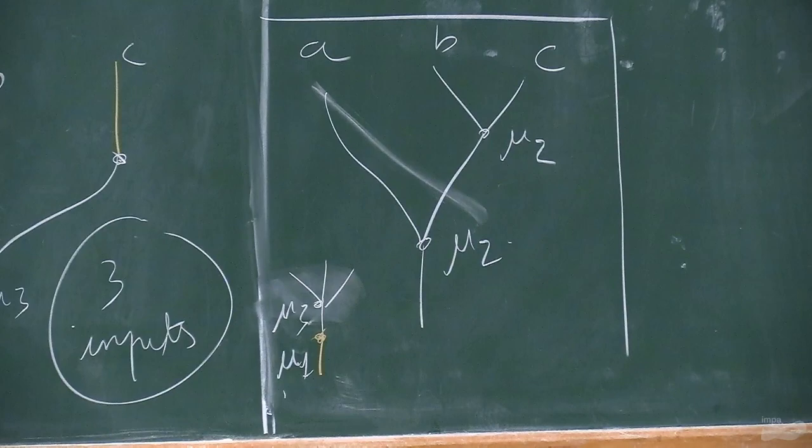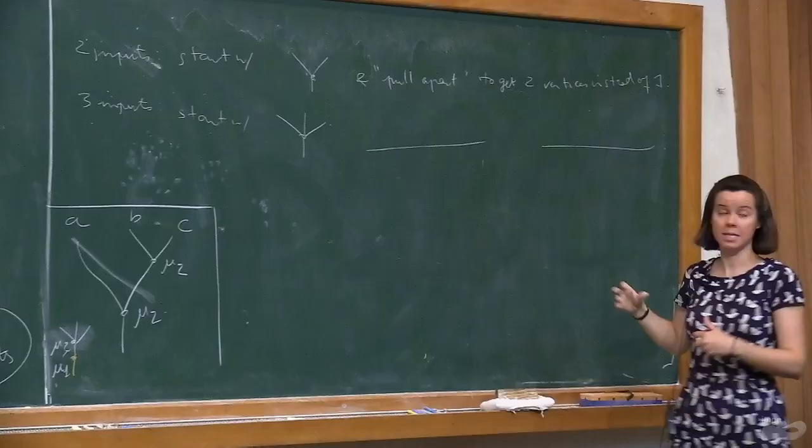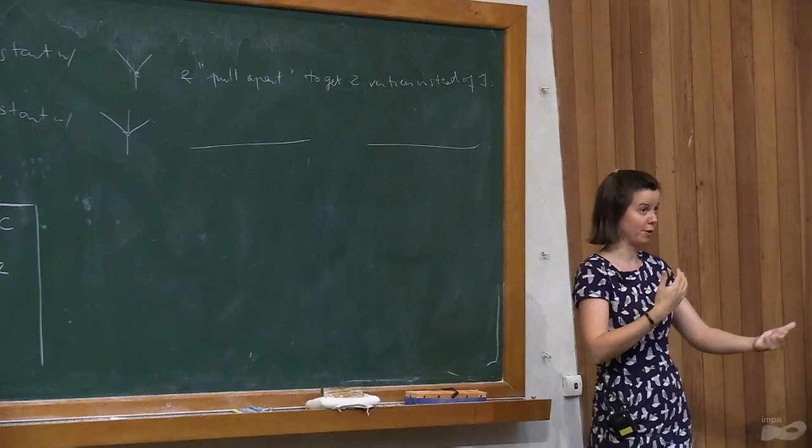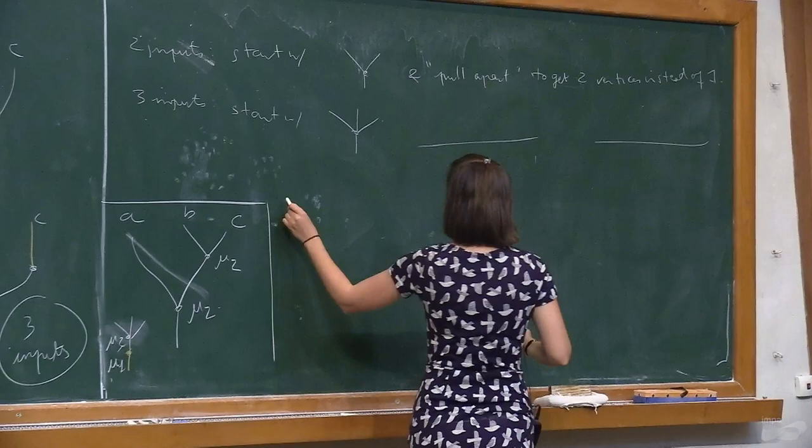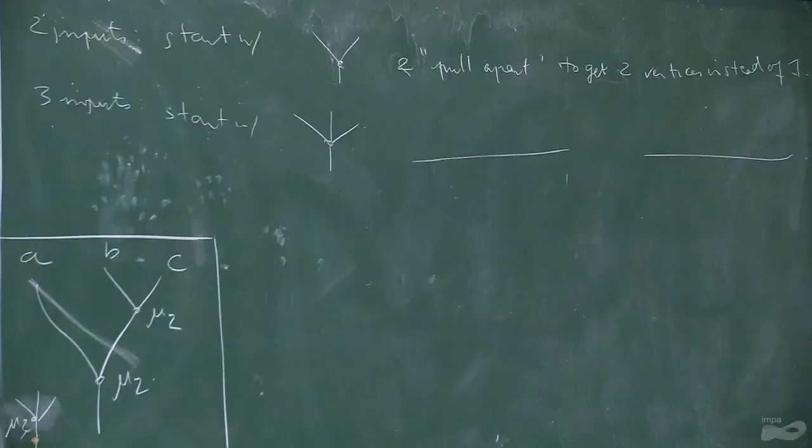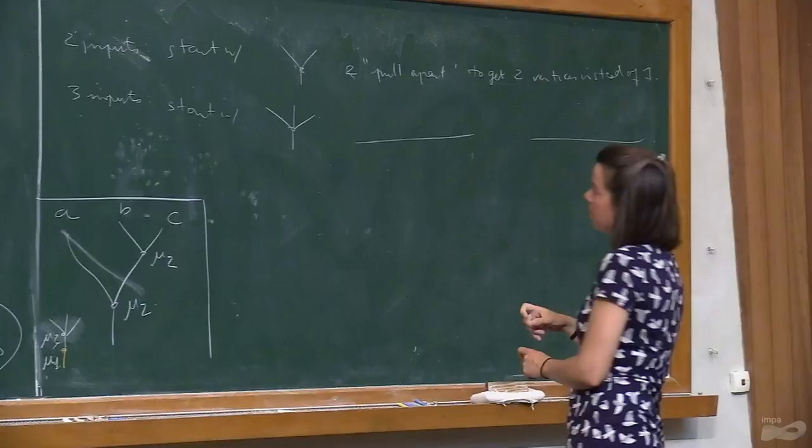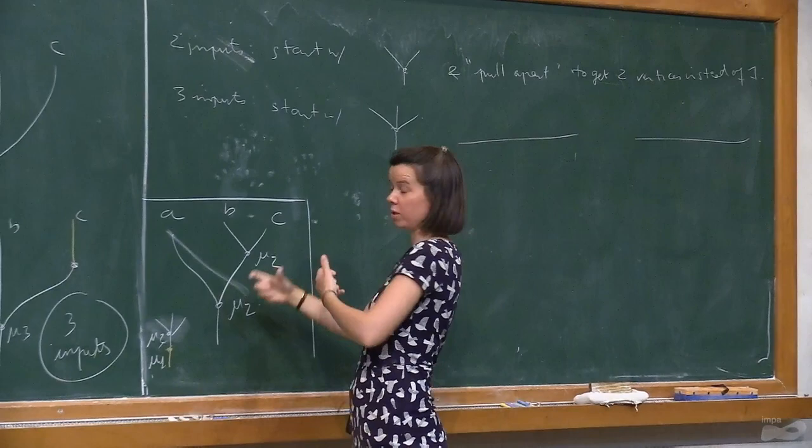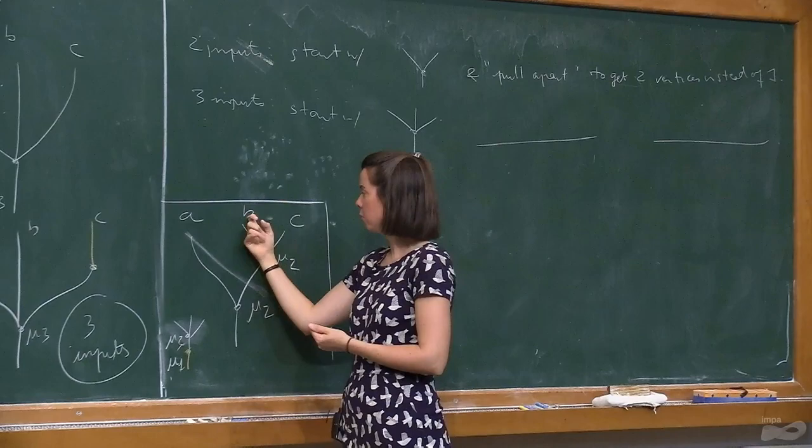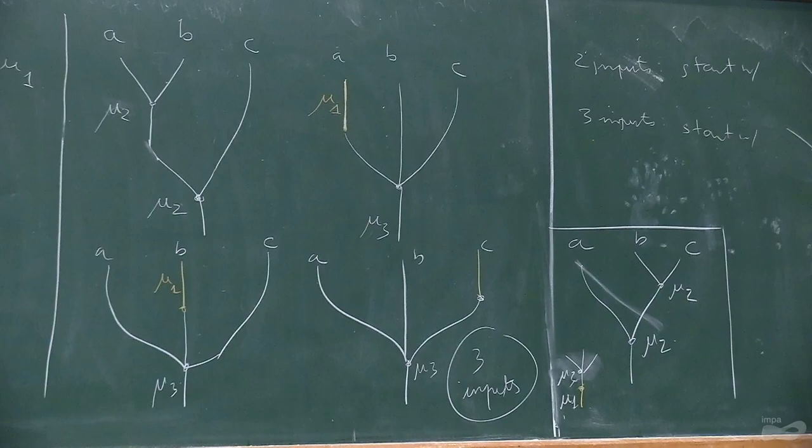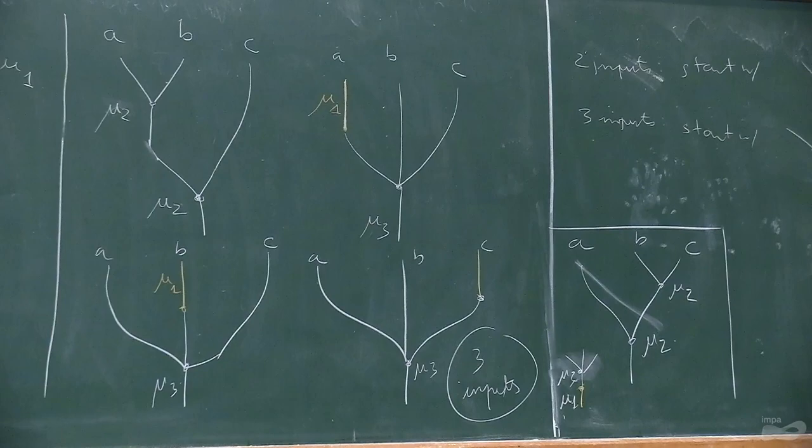Think of these guys as vertices. I could have a mu1 and then a mu3. The way to think of these is you start with this and ask how can I pull this apart to get two vertices instead of one. You should think of three inputs as starting with a single guy like this and pulling apart so that you have two vertices. You could either start with this big guy and split it or you could extend any of the legs.